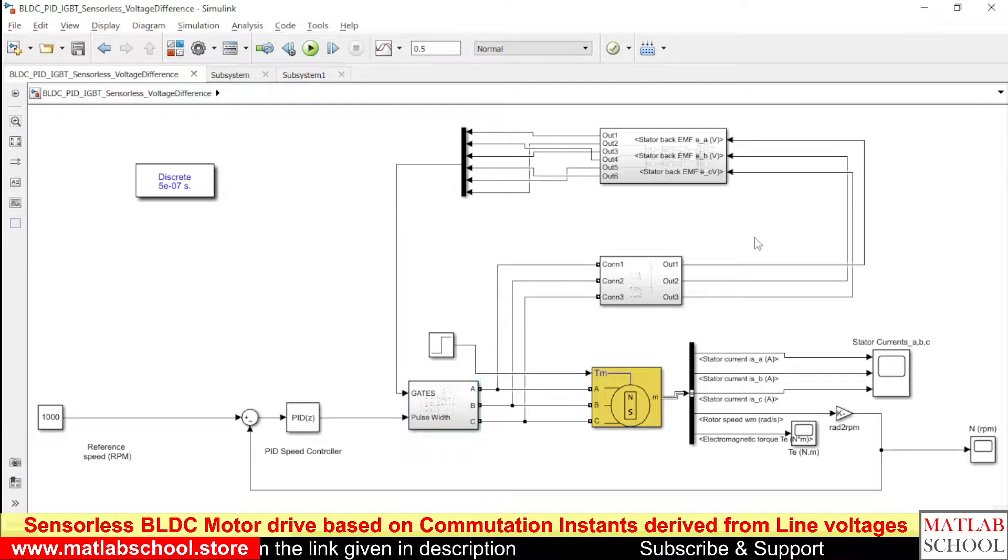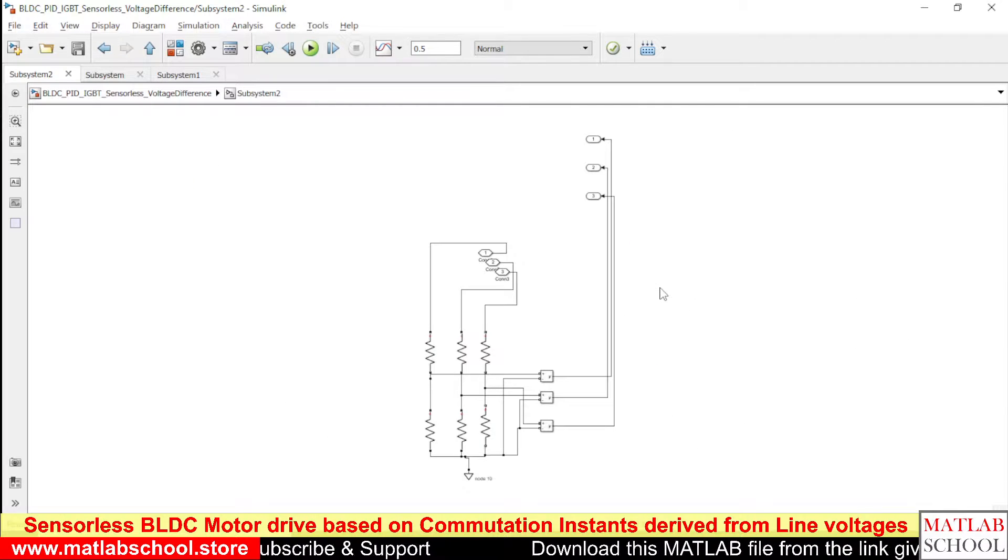But to get to know the details of the rotor position, we need to measure the voltages. So here we are measuring the voltages. And here we have the voltage divider circuit or potential divider circuit. And from there, we are measuring the voltages.